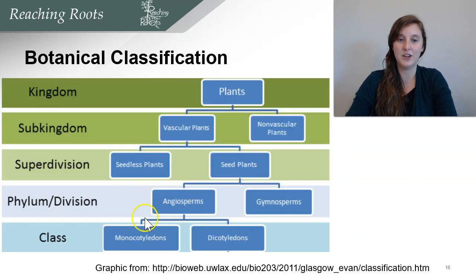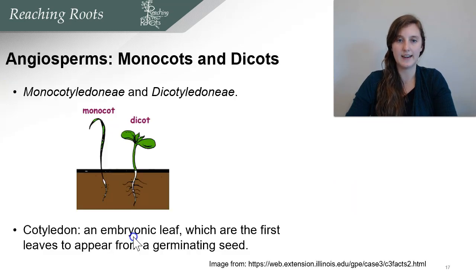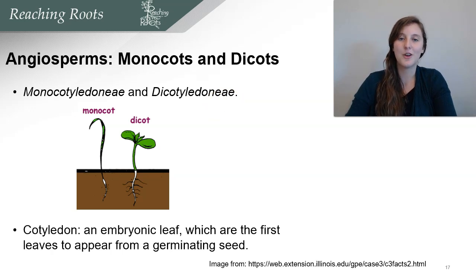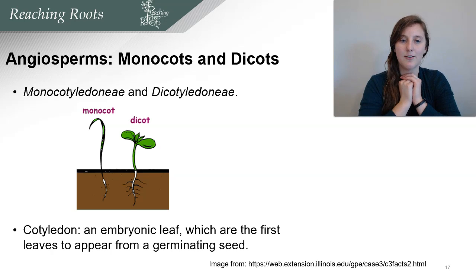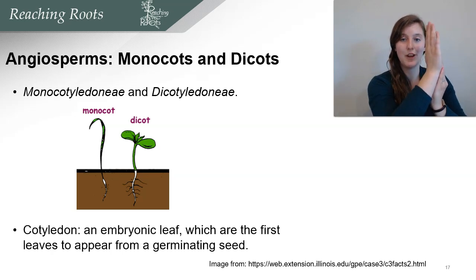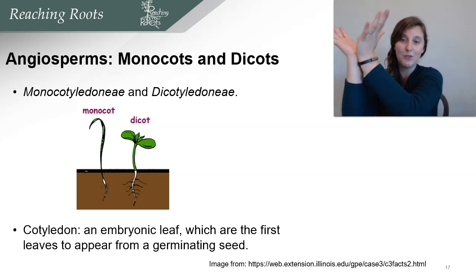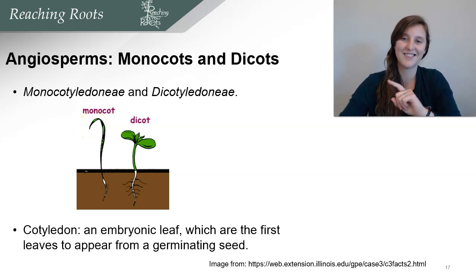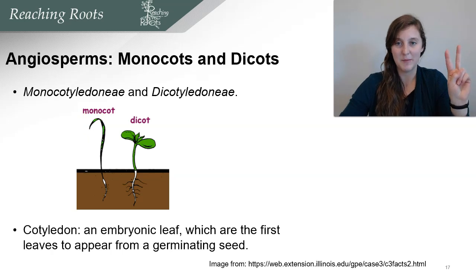Angiosperms are broken down into two different classes: monocotyledons and dicotyledons. Both share the common word 'cotyledon.' A cotyledon is an embryonic leaf — the first leaves that appear from the seed. In a monocot, the seed will germinate and one leaf will be the first visible leaf. In a dicot, the seed will germinate and two leaves will become visible. We call them monocot — 'mono' meaning one — and dicot — 'di' meaning two — cotyledon.